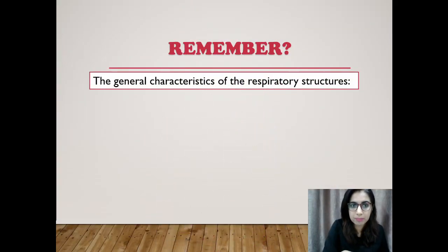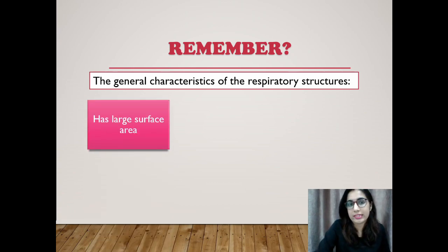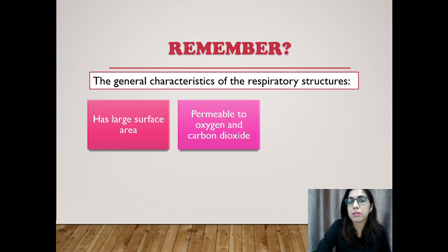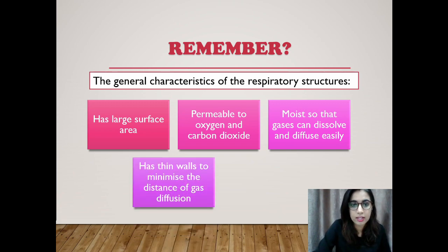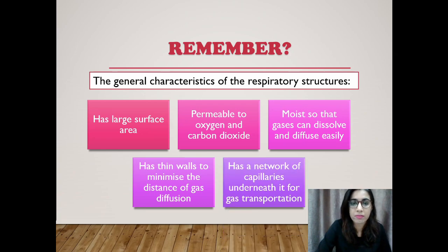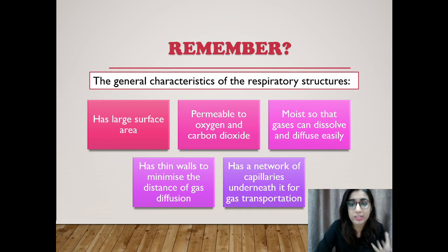You must remember the general characteristics of respiratory structures — they are almost similar across organisms. Firstly, it must have a large surface area. It must be permeable to oxygen and carbon dioxide. It has to be moist so that gases can dissolve and diffuse easily. It should have thin walls to minimize the distance of gas diffusion. And it should have a network of capillaries underneath it for gas transportation. All these characteristics are very important for the respiratory structure to function well.